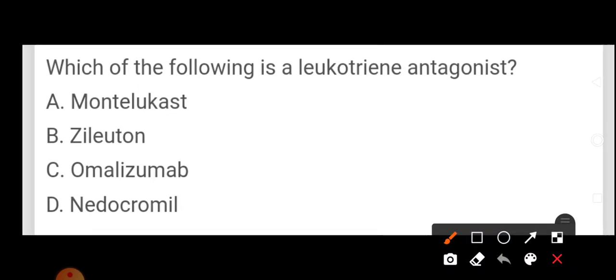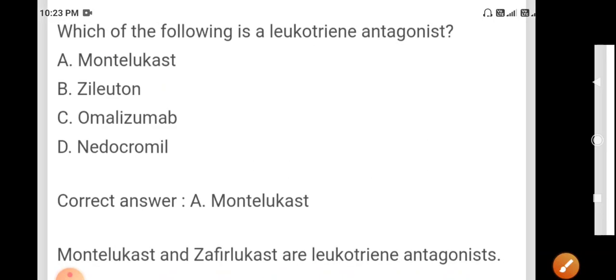Which of the following is a leukotriene antagonist? Montelukast, zafirlukast, zileuton, omalizumab, nedocromil. Omalizumab is a mast cell IgE inhibitor. Nedocromil is a mast cell inhibitor. Montelukast and zafirlukast are leukotriene antagonists.